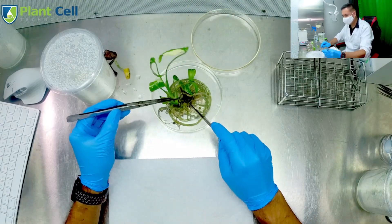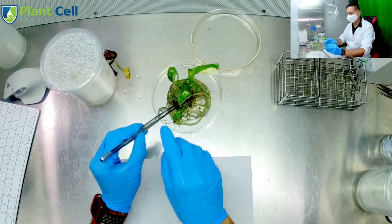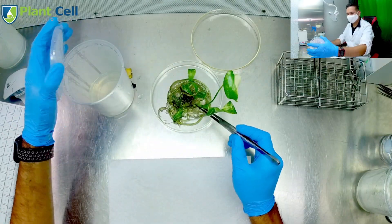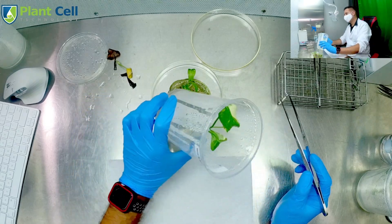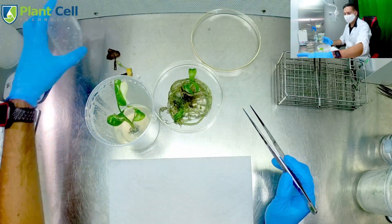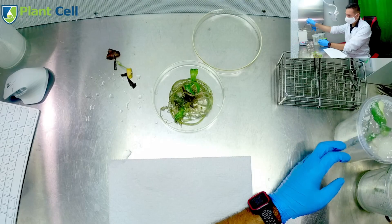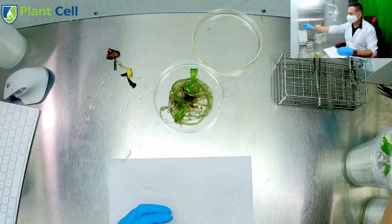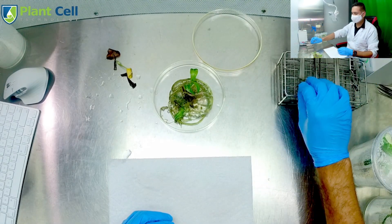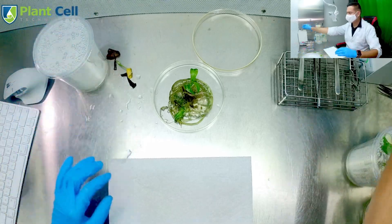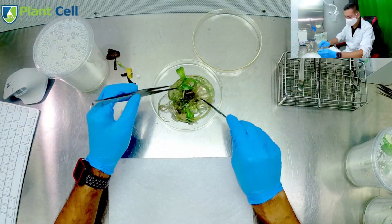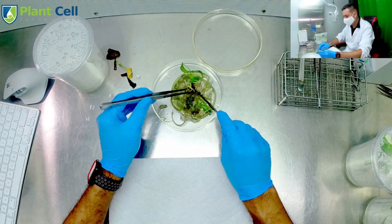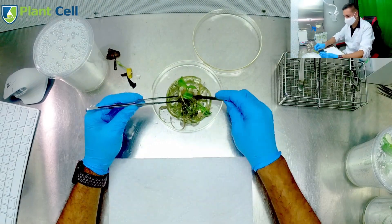And 1 milligram per liter of PPM. With that I'm hoping I will get a faster multiplication rate. However, I know I will get smaller plants. So depending on your situation, if you want to get more plants, then it's okay to test a higher concentration of BA.